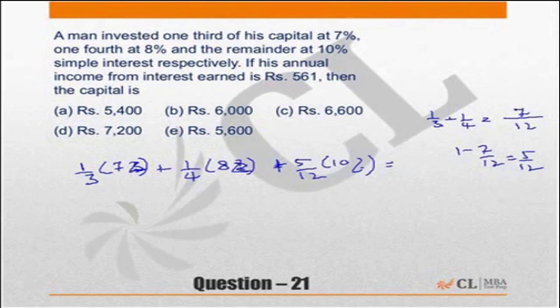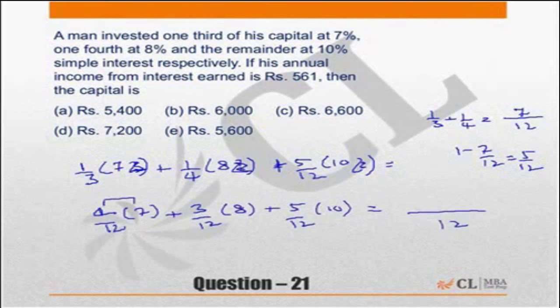Make the denominator equal to 12 to everyone. So this is 4 by 12 of 7 plus 3 by 12 of 8 plus 5 by 12 of 10. Which is nothing but 28 plus 24 is 52, 52 plus 50 makes it 102. So the average rate of interest is 102 by 12.